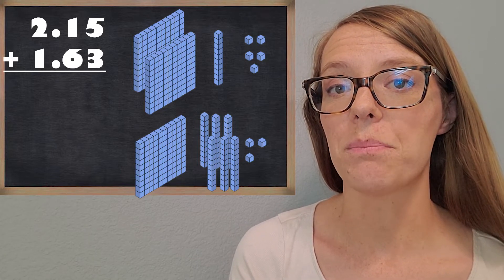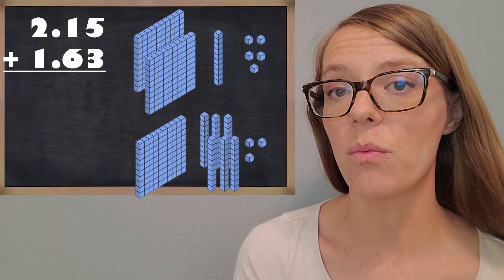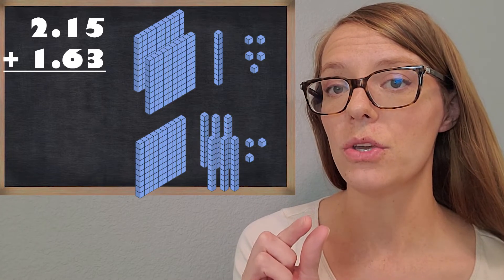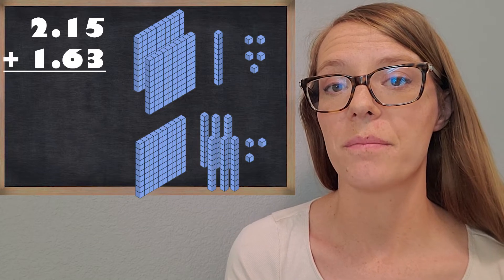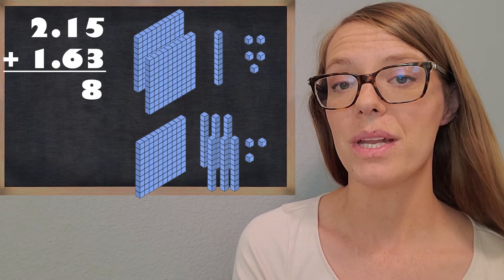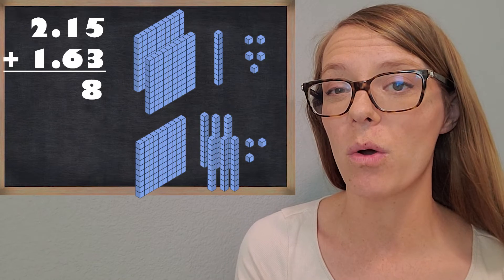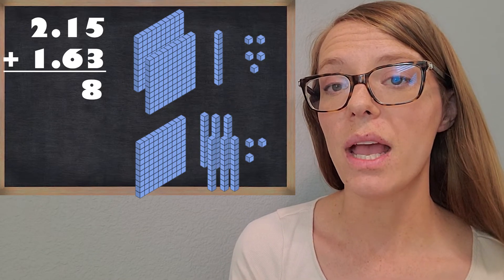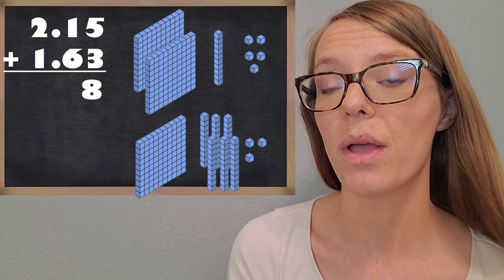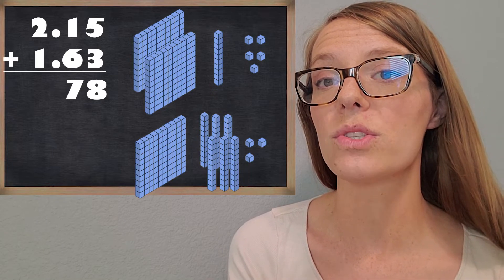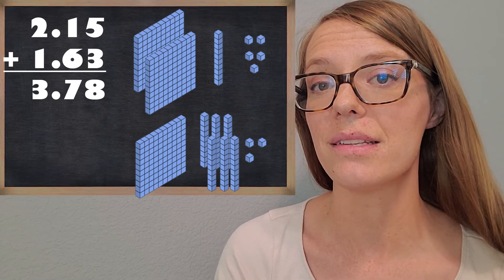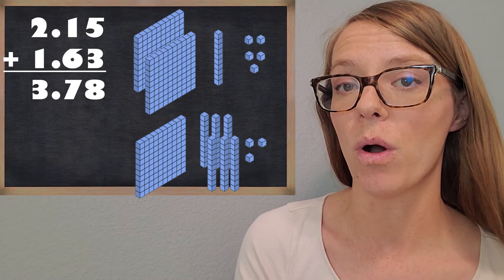Now let's add those all up together. We always want to start with the smallest place value, so we'll start with those hundredths or the little units. How many of those do you have? Great — eight. So we didn't have to do any regrouping. If you got 10 or more, we'd have to think about what we're going to do to regroup. Now, what do you get for the dimes or the longs? How many of those do we have? Awesome — seven. And then how many whole dollars do we end up with? Great — three. So $3.78. And those base 10 blocks really helped us to understand what we were doing.